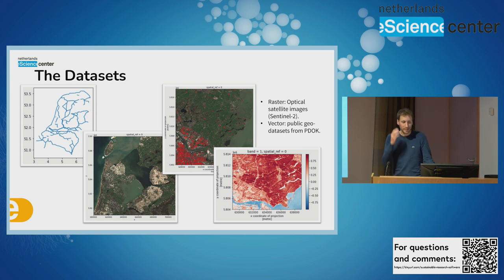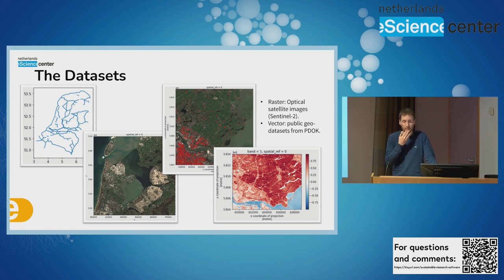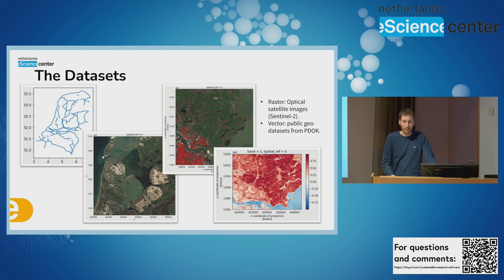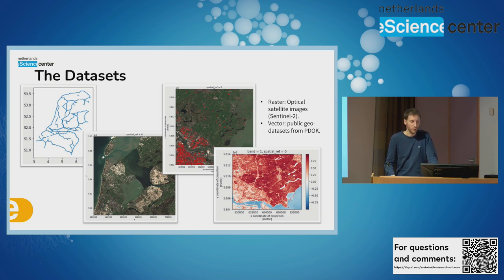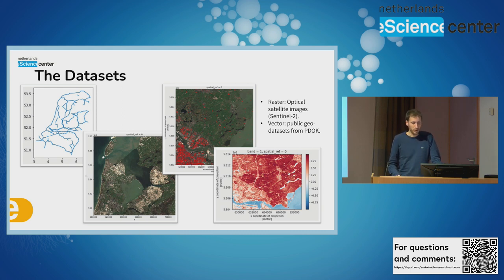The datasets employed in the lesson are a mixture of raster and vector data. For the raster, we use optical satellite images from the Sentinel-2 mission. For the vector data, we use public geodatasets from the Dutch government or other public institutions, all accessible from the PDOK portal. This is a snapshot of some of the figures produced during the lesson.